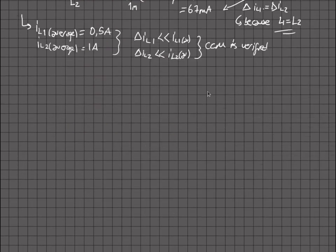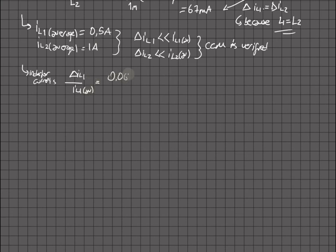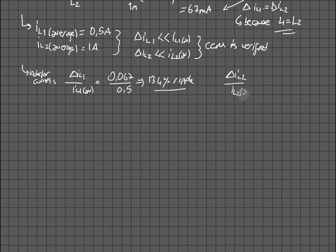The question asks for the percentage error in the inductor currents. ΔIL1 / IL1_avg = 0.067 / 0.5 = 13.4% ripple. For the second inductor it is 0.067 / 1.0 = 6.7% ripple.